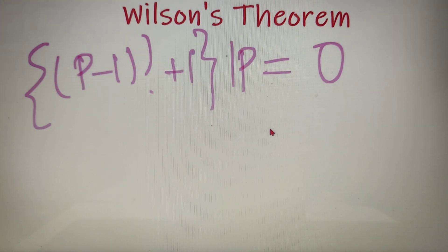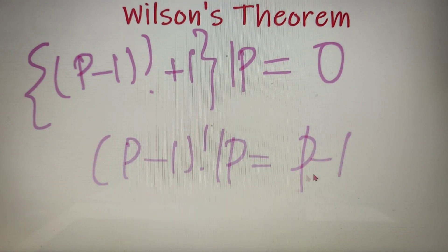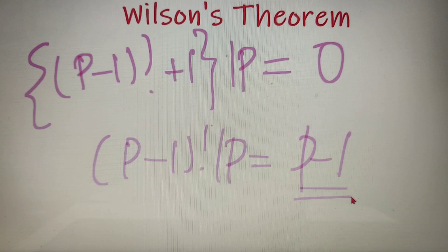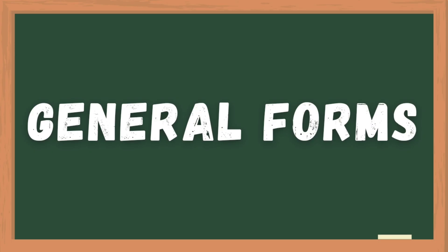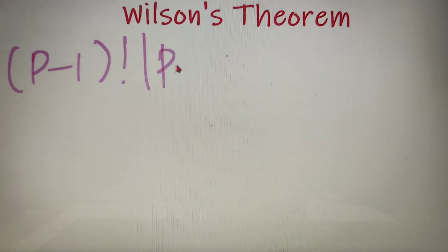Wilson's theorem is more commonly stated as follows: when (p-1) factorial is divided by the number p, the remainder obtained is p minus 1.